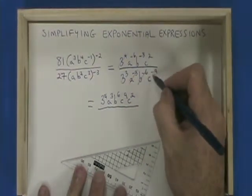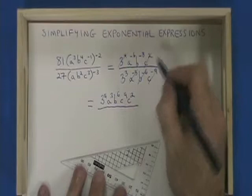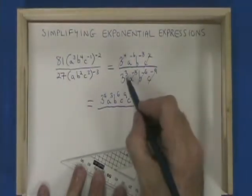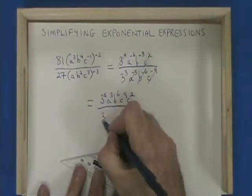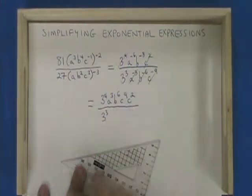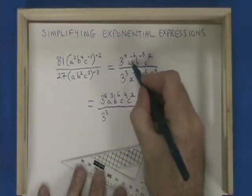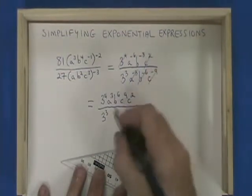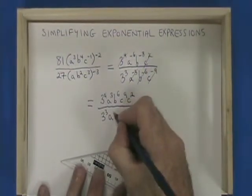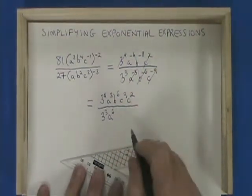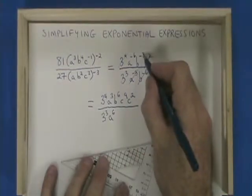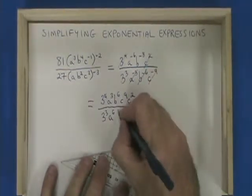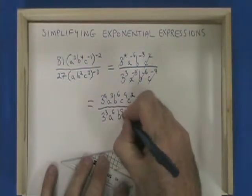These are all taken care of. The 3 to the power of 3 on the bottom stays on the bottom — it already has a positive exponent. a to the negative 6 moves to the bottom and becomes a to the positive 6. b to the negative 8 moves to the bottom and becomes b to the positive 8.